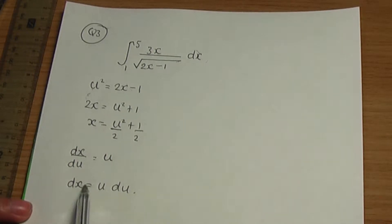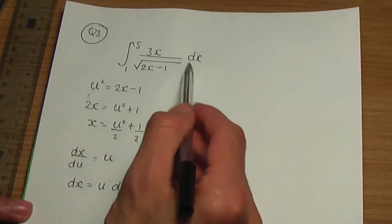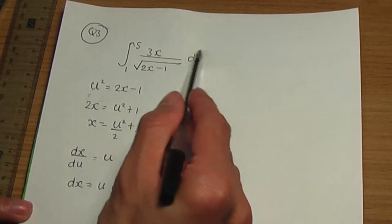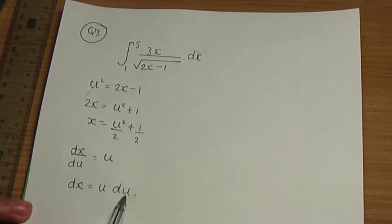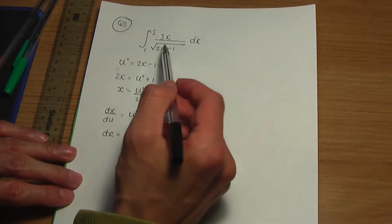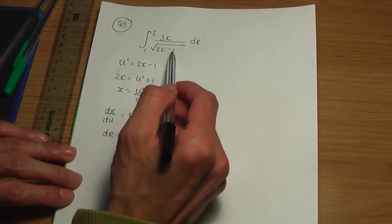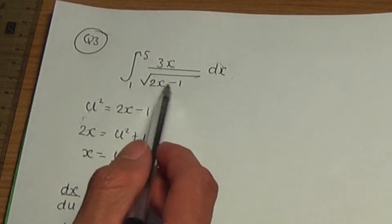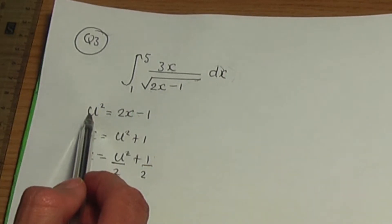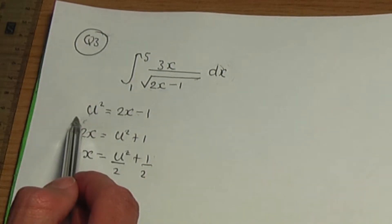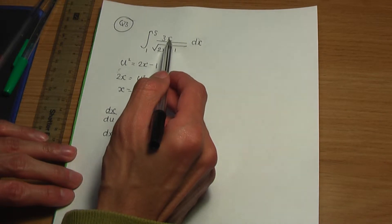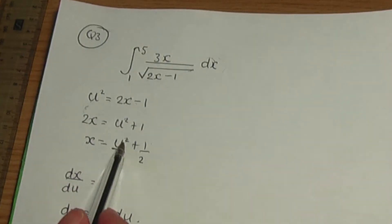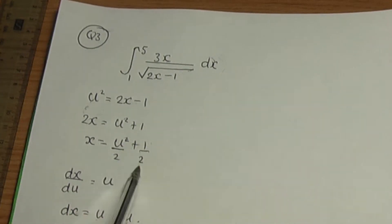When I go through substitution, when I rewrite the integral, dx within the integral can be replaced by u du. And I can replace the 2x minus 1 by u squared, or you can replace the root of 2x minus 1 by u. Either way, you're going to get the same thing. And x over here, we can replace by u squared over 2 plus 1 half.